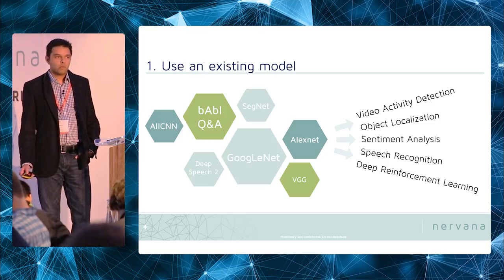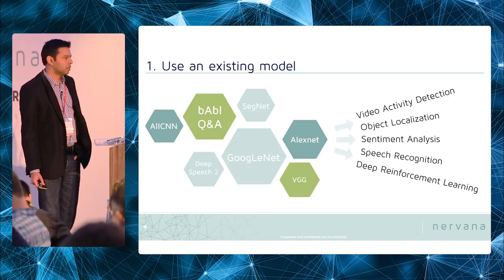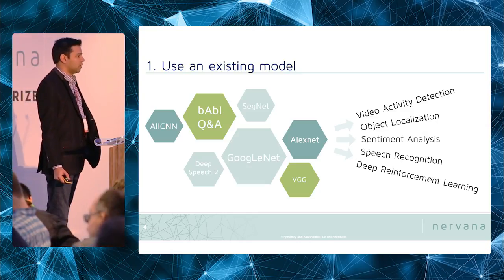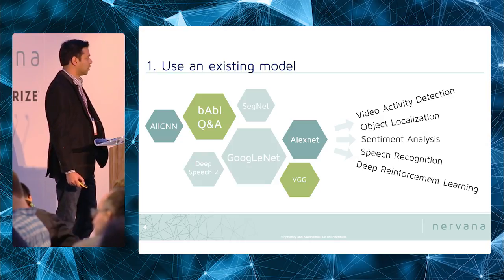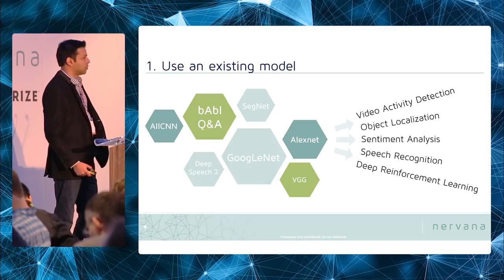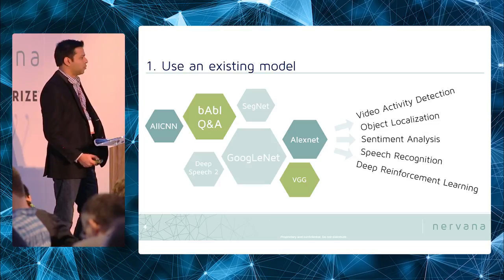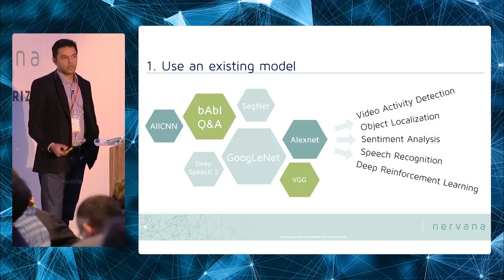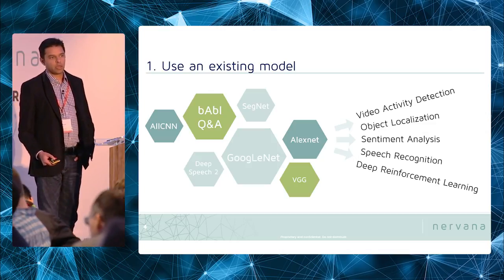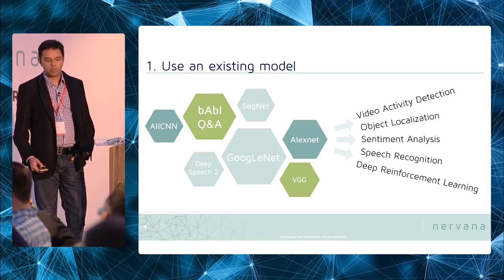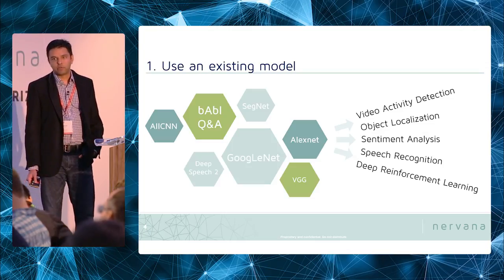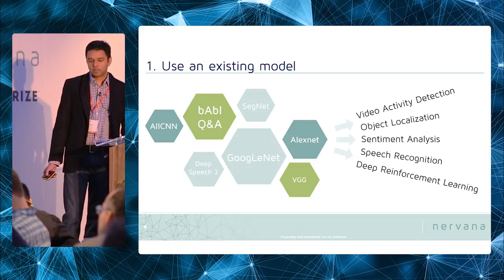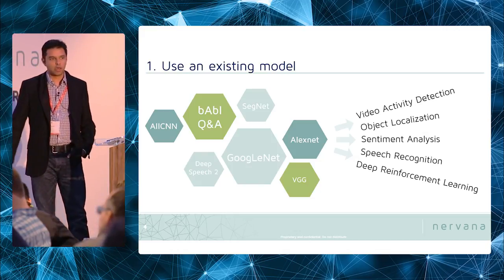One tip is you don't need to reinvent the wheel — you can use an existing model. The field of AI and deep learning has been unusually open, so you get a lot of publicly available models. Through the process of transfer learning, you can take one of these publicly available models and apply them to your data. On our platform, you can get models for video activity detection, object localization, sentiment analysis, speech recognition, and others.